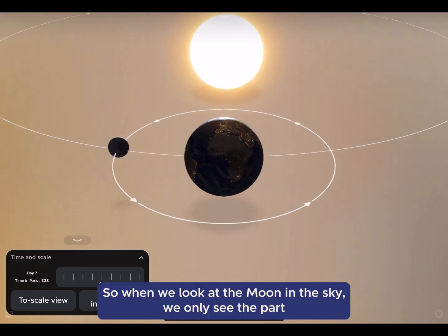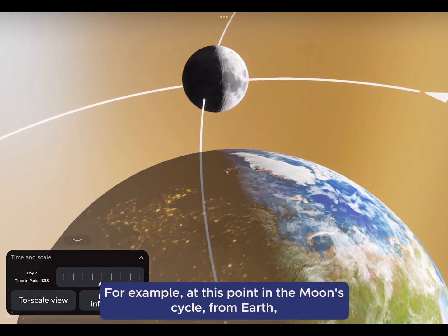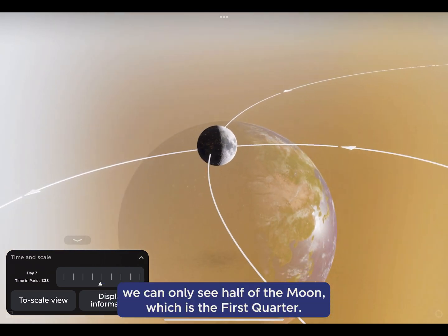So when we look at the Moon in the sky, we only see the part that is lit by the Sun. For example, at this point in the Moon cycle from Earth, we can only see half of the Moon, which is the first quarter.